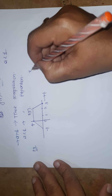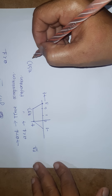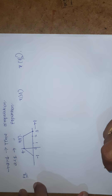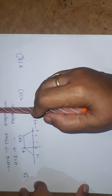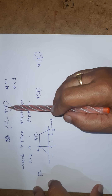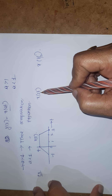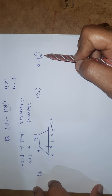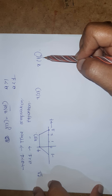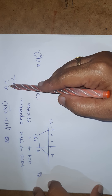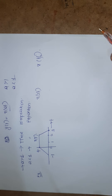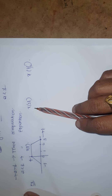Here I am considering a as 2, giving x(2t), and next is x(t/2). If a is equal to 2, it is x(2t) — 2 is greater than 1. If a is equal to 1/2, it is x(t/2) — 1/2 is less than 1, which is 0.5. So a greater than 1 gives compression, and a less than 1 gives expansion. So now we will work out x(2t) and x(t/2).